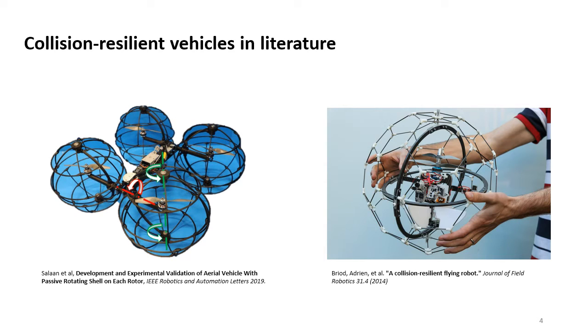To help aerial vehicles operate in challenging environments, many collision-resilient designs have been proposed. A popular approach of collision-resilient design is to protect the propellers of the vehicle. For example, sphere cages that can rotate about propellers are shown in the picture on the left. The design prevents the vehicle from bending moment and thus increases its surviving rate.